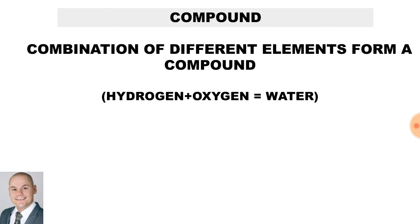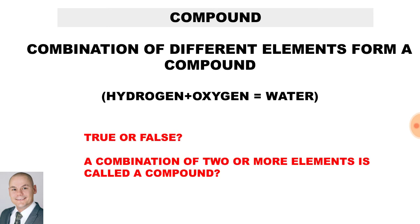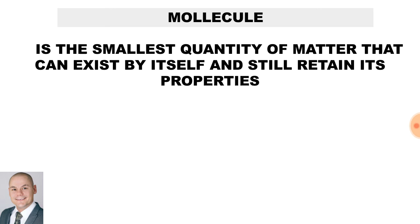What is a compound? A compound is a combination of different elements, such as hydrogen and oxygen, to form water. True or false? A combination of two or more elements is called a compound. True.